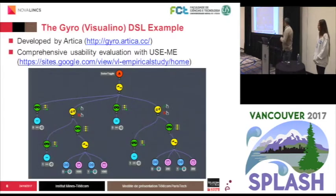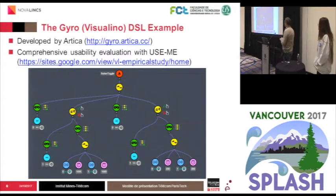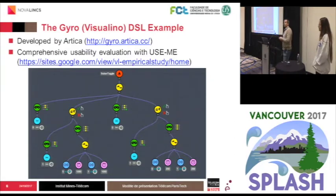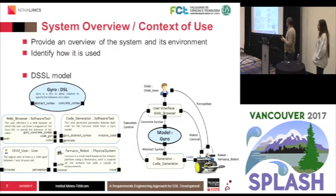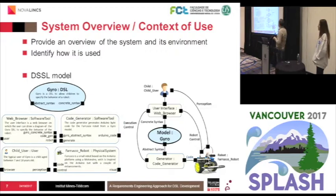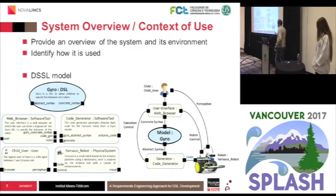To explain our method, I will use this language — the simple Gyro, first named Visualino, DSL example. It's basically a simple language — you see a screenshot here — that children can use to program robots, similar to Lego, which has a similar language. One of the first practices of the requirements engineering handbook is to provide an overview of the system and all the context in which the language is being used, and we do that with our DSSL language.